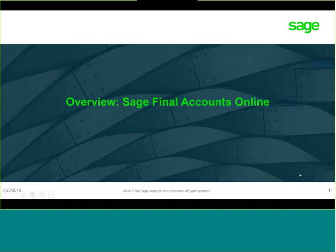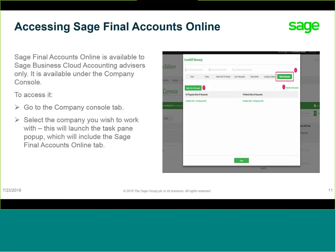I'd now like to move on to a quick overview of Final Accounts Online. Where do you find Final Accounts? Once you're registered as an advisor, you'll find Final Accounts under the Company Console area. You select the company you're working in and launch your Task Plan pop-up. There you'll find the Final Accounts tab. You will then add a new set of accounts or open up one of your existing sets.